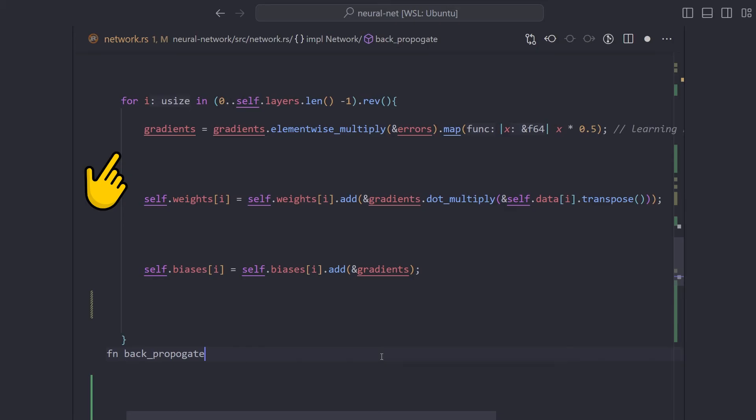So the more wrong a neuron is, the more it will get updated. Finally, we update our weights and biases, and now we've completed our backpropagation function.